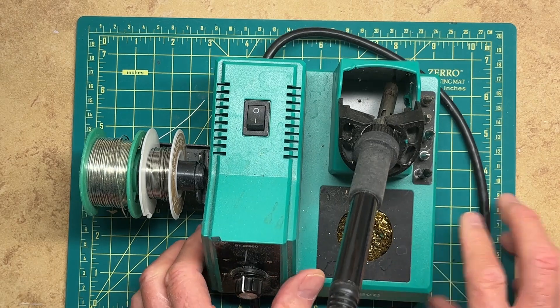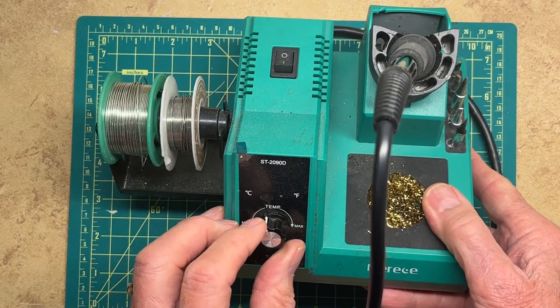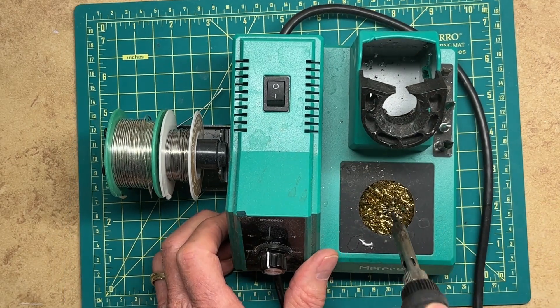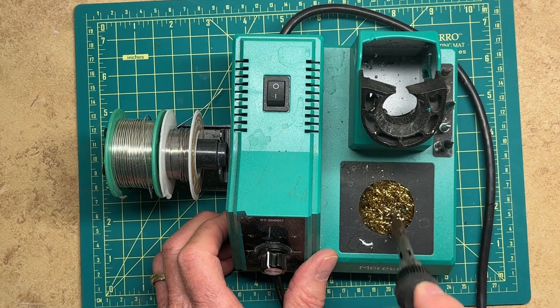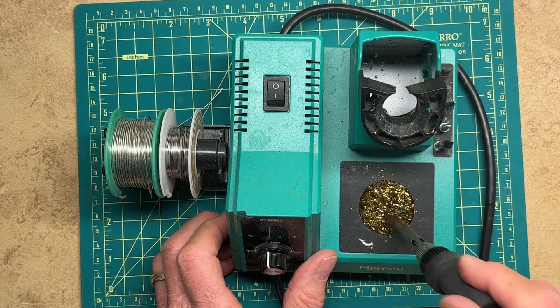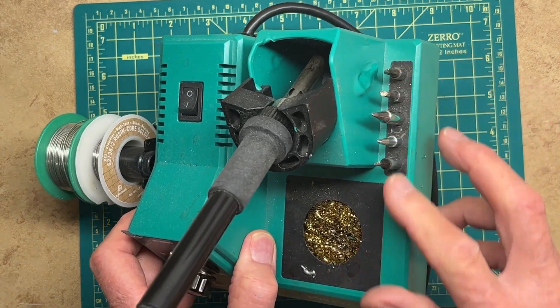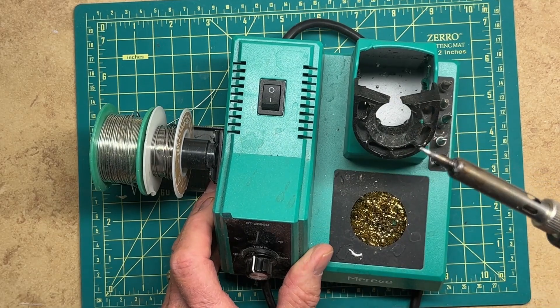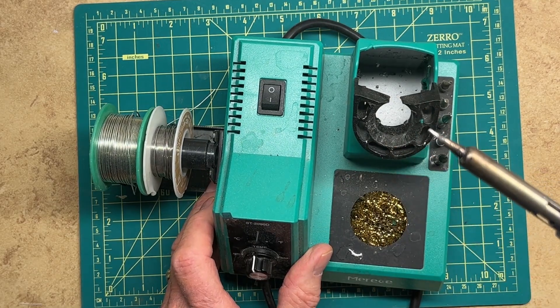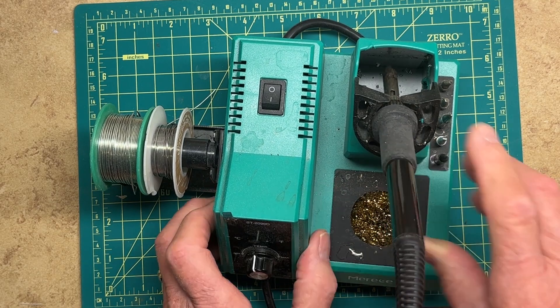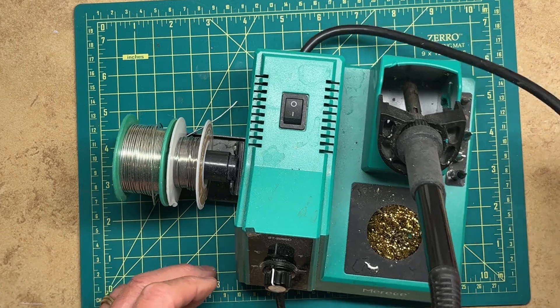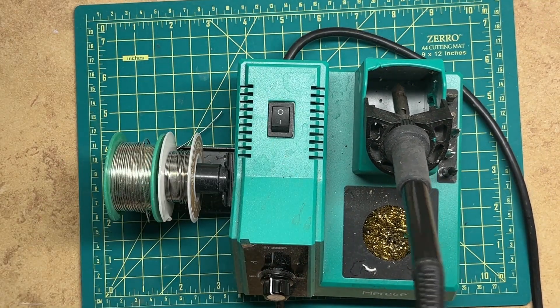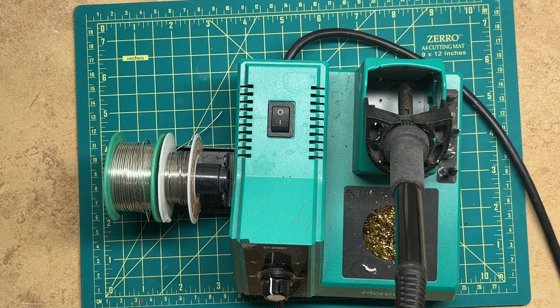So this thing has a temperature controller, a way to clean your tip when it's hot. You just run it, run the point through there, and it cleans it, and a number of extra points. I just mostly use this pointed one, this needle nose or whatever.